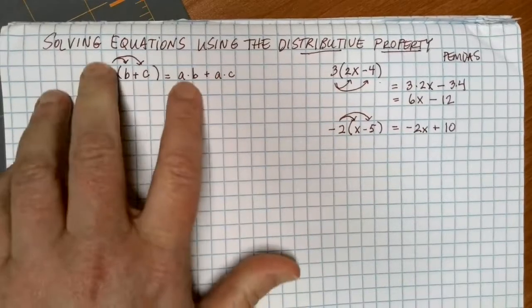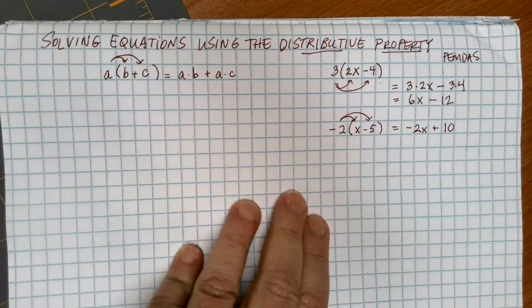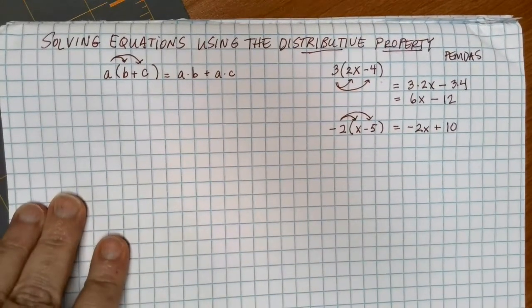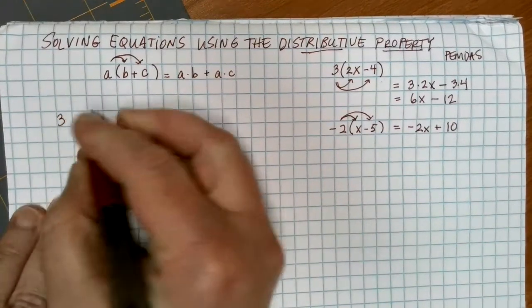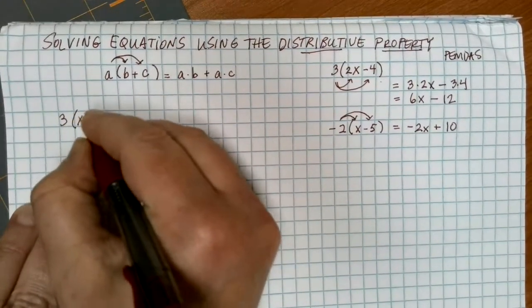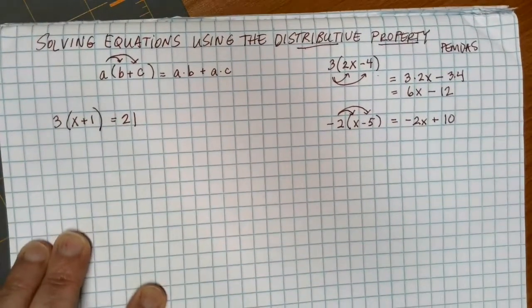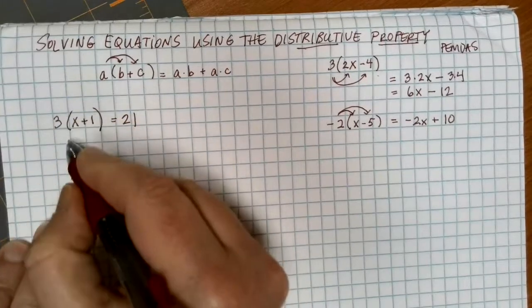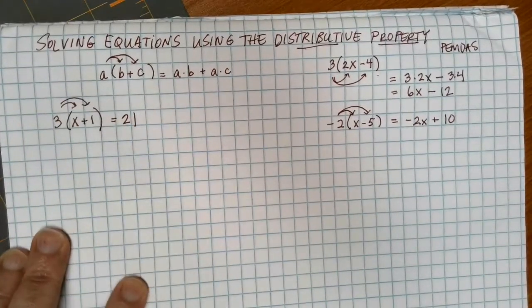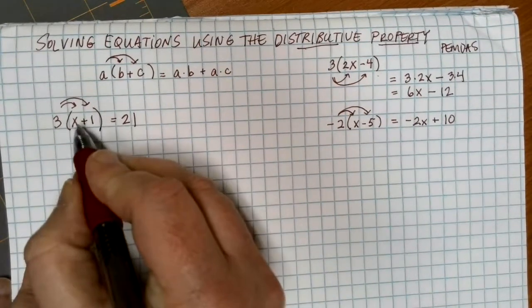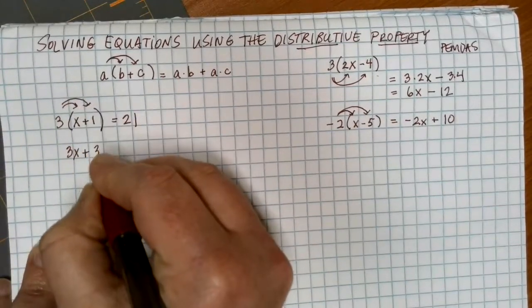This is a really useful property that we can use to get rid of parentheses when they show up in equations that we're trying to solve. Let's look at a couple of examples of equations with parentheses. Suppose I have 3 times the sum of x plus 1 is equal to 21. I want to get rid of these parentheses, so I can use the distributive property and multiply that 3 through everything inside. 3 times x gives me 3x, plus 3 times 1 gives me 3.